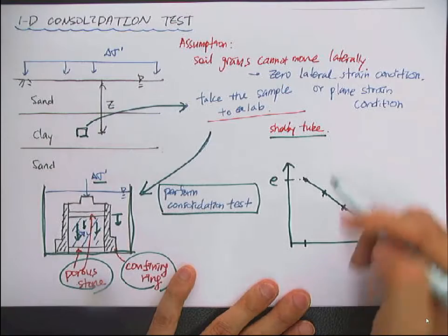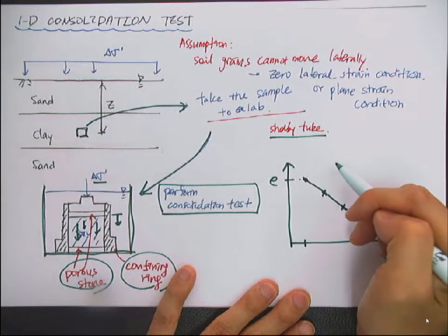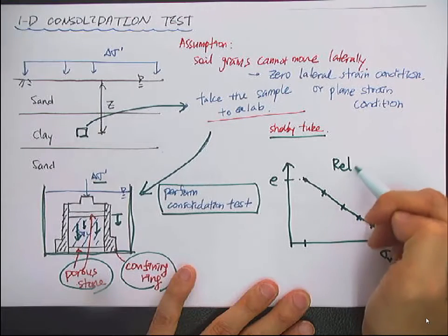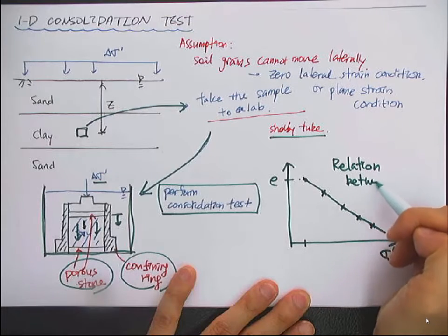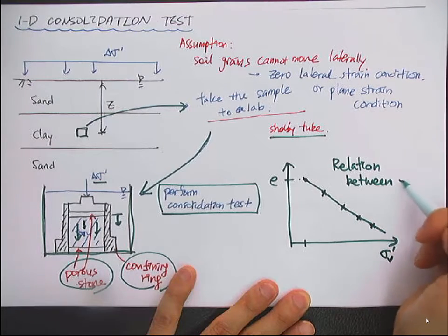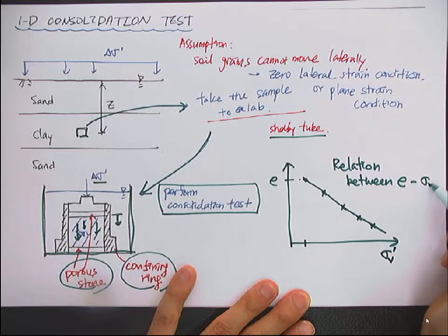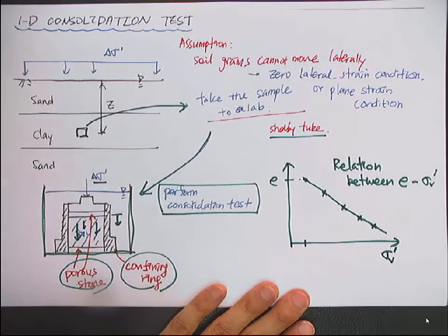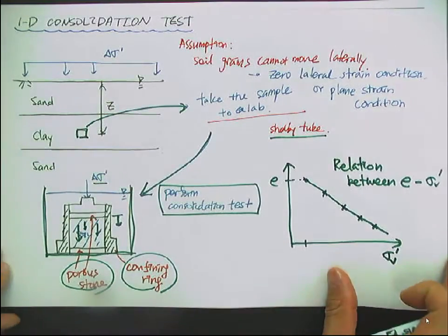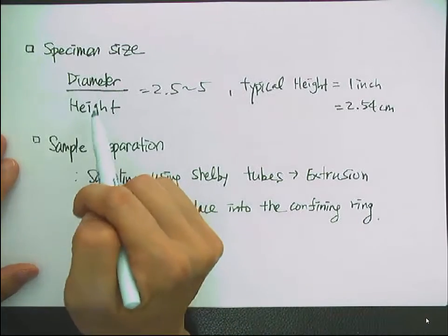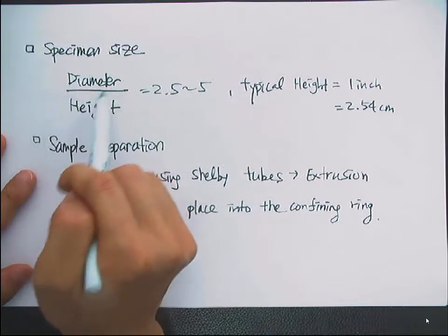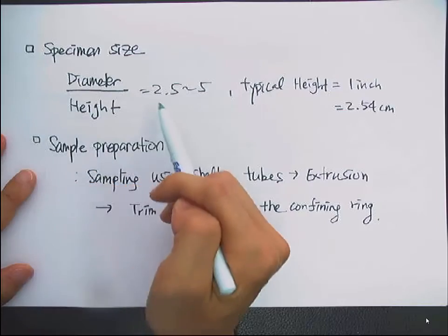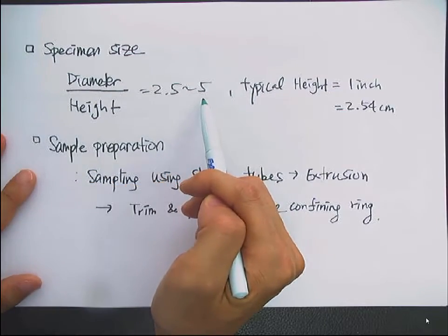From this curve, we can get the relation between void ratio and the vertical effective stress. In general, the specimen size — the diameter, and the ratio of diameter to height — is about 2.5 to 5.